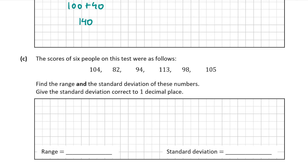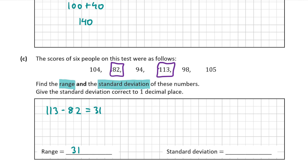Part C says that the scores of 6 people on the test were 104, 82, 94, 113, 98 and 105, and we have to find the range and standard deviation. The range is simply the difference from the largest to the smallest number. The largest is 113 and the smallest is 82, so 113 minus 82 gives us 31 — therefore the range is 31.